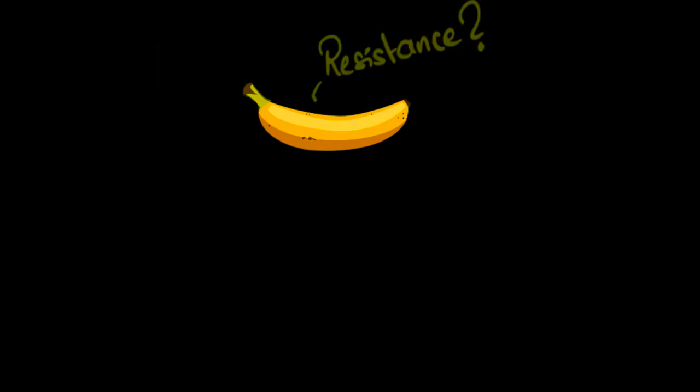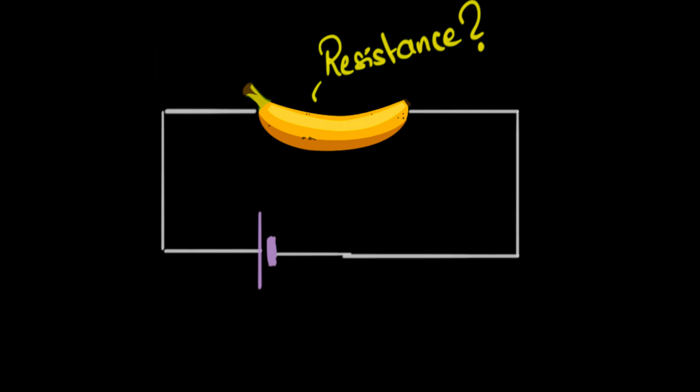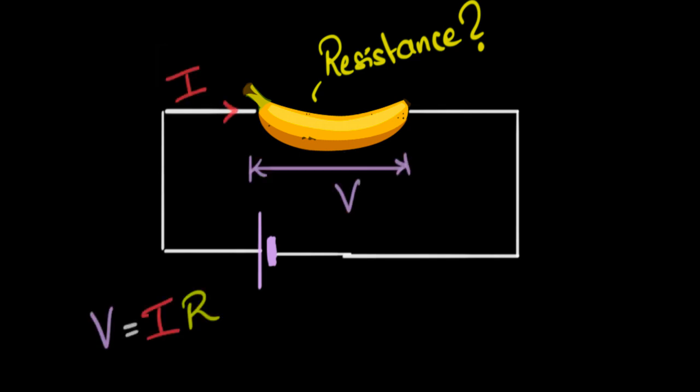I give you a banana and ask you, what's its electrical resistance? What do you do? You will look at me in a funny way, but then you will remember Ohm's law. You'll just hook this up to a battery, calculate the voltage across it, the current flowing through it, and use Ohm's law. That's how you can calculate the resistance, isn't it?